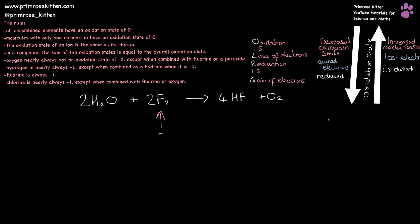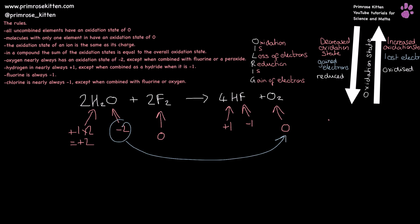Here we have fluorine on its own so that is going to be zero, oxygen is minus two, hydrogen is plus one and there are two of them giving us plus two overall. Oxygen now over here is zero, fluorine is minus one, hydrogen again is plus one. So we can see that oxygen has gone from minus two to zero — this is an increase in the number, it has lost electrons so it has been oxidised. Fluorine has gone from zero to minus one, this is a decrease in oxidation number, it has gained electrons and been reduced.